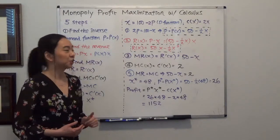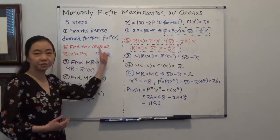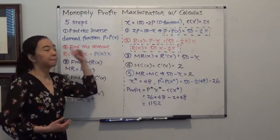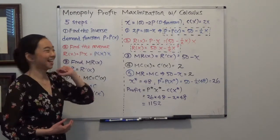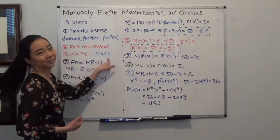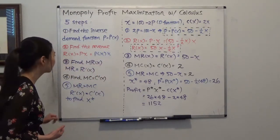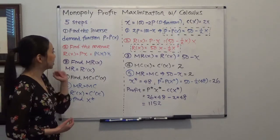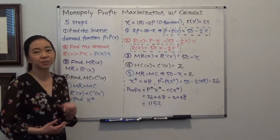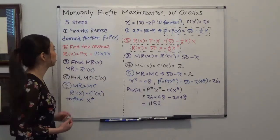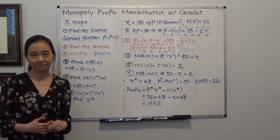Second, you are going to find the revenue function by multiplying your price function and quantity. The third step is that you are going to take the derivative of the revenue function to find the marginal revenue function.